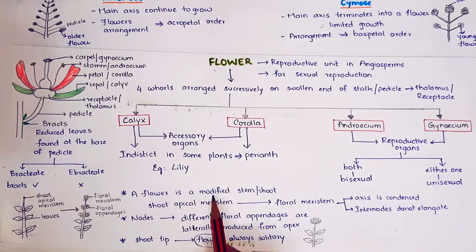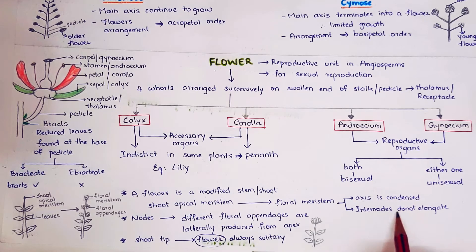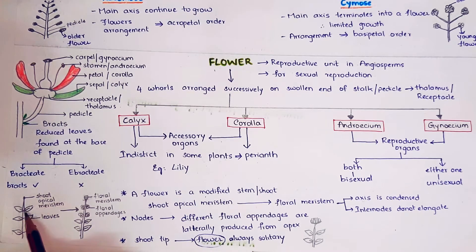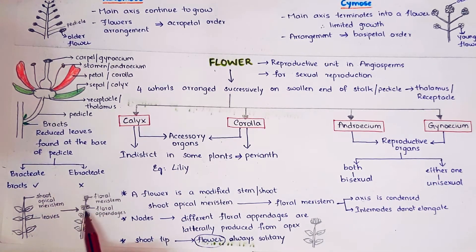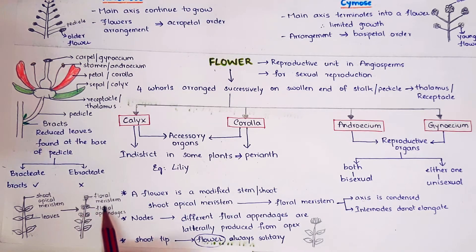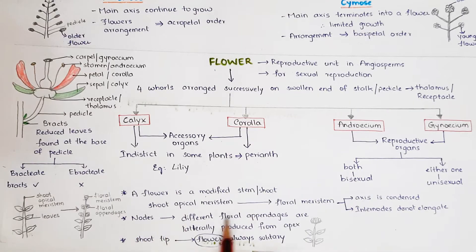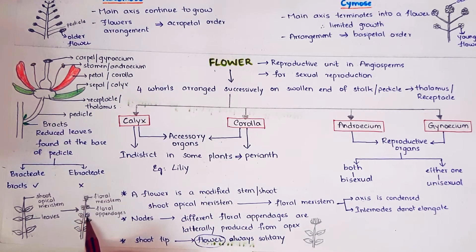A flower is a modified stem or shoot. The shoot apical meristem is developed into a floral meristem. In case of floral meristem, the axis is condensed and internodes do not elongate. The shoot apical meristem is converted into the floral meristem, which produces the floral appendages — calyx, corolla, androecium, and gynoecium. At nodes, different floral appendages are produced from the apex instead of leaves.